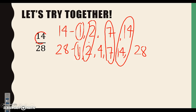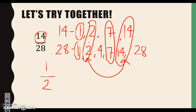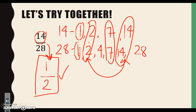Let's start with the top. 14 divided by 14 we know is 1. And then 28 divided by 14 — remember when we were listing our factors, 14 times 2 gave me 28, so 28 divided by 14 is 2. We have 14 twenty-eighths in simplest form, which is 1 half.